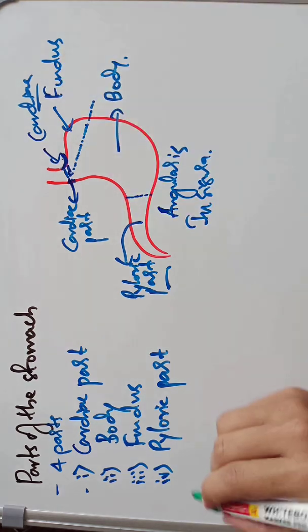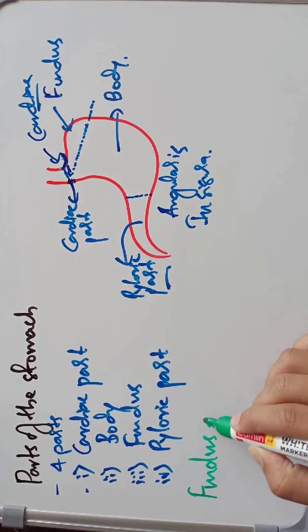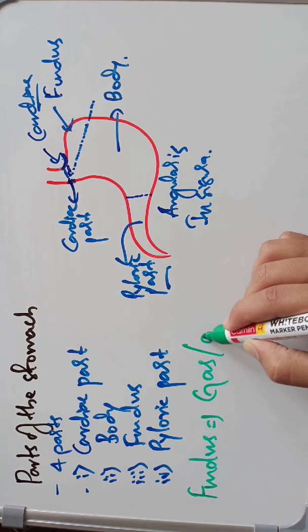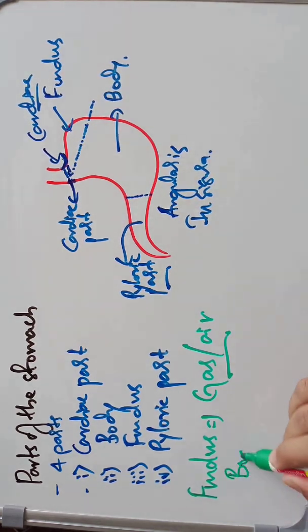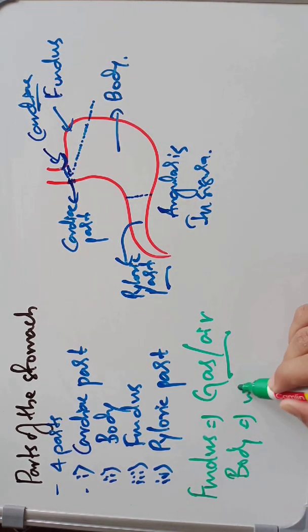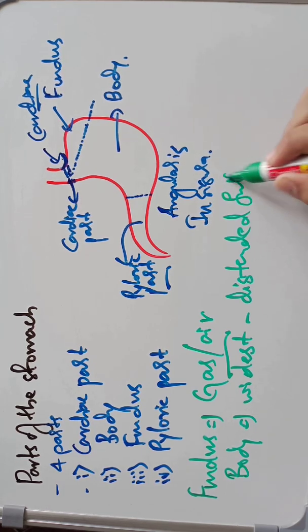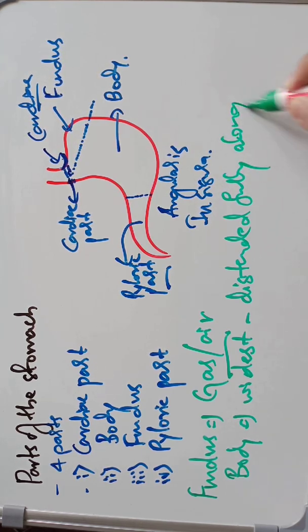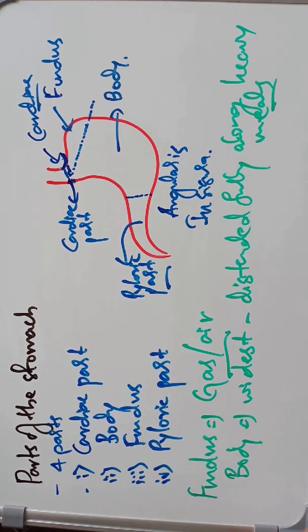The fundus is relatively filled with gas or air. The body is the widest part of the stomach and it becomes fully distended during heavy meals.